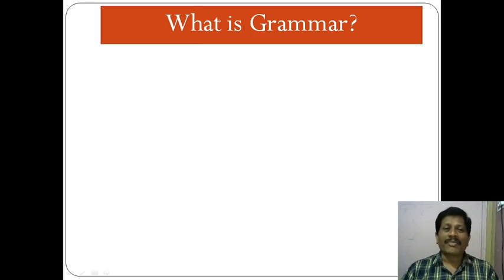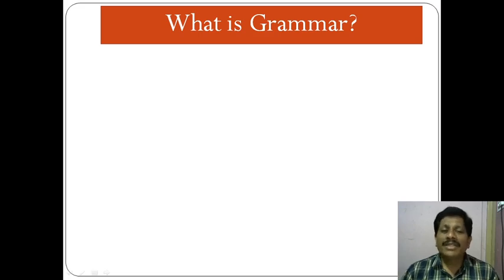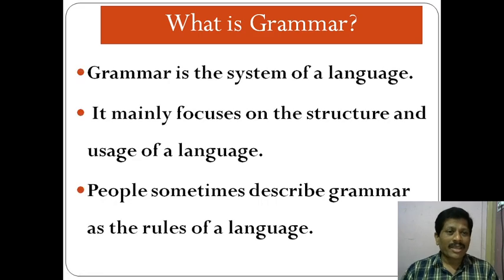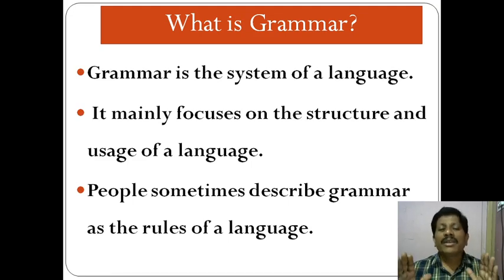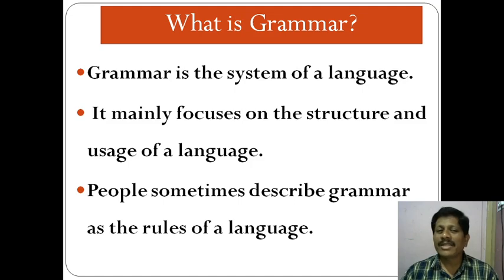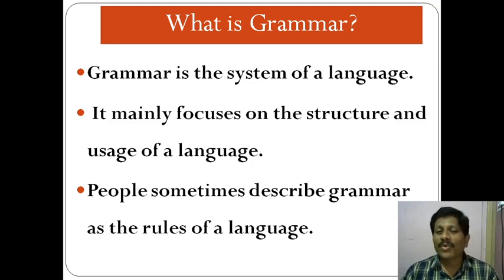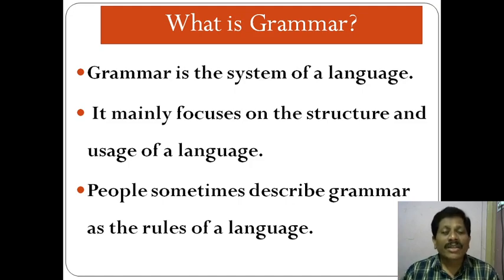What is grammar? We must have the idea of what is grammar and what is the need of learning grammar. Grammar is the system of a language — as every machine or every thing has its own system, grammar is the system of a language. Or we can say in brief, grammar is the science of a language. As science tells us what to do, when to do, how to do, why to do — in the same way, grammar tells us the system. It guides how to use a language in many ways.